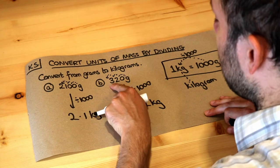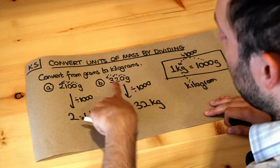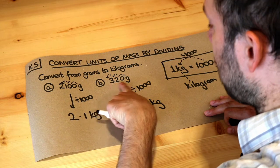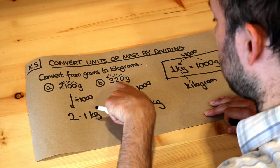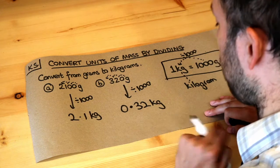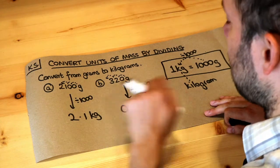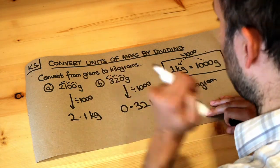Note, by the way, that since a thousand grams is one kilogram, and 320 grams is less than a thousand grams, we know our answer should be less than one kilogram. So it's got to be zero point something, because we know it's less than one kilogram.